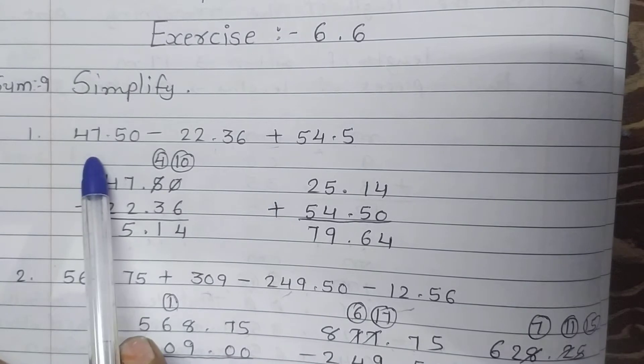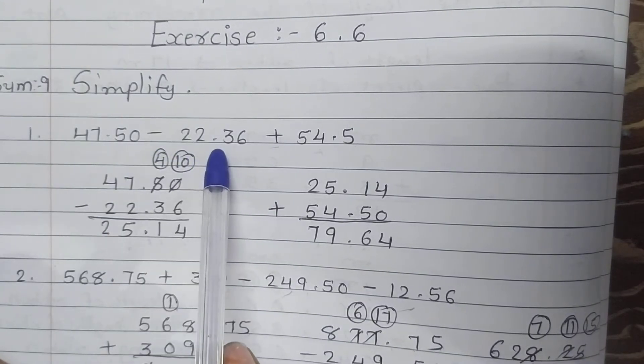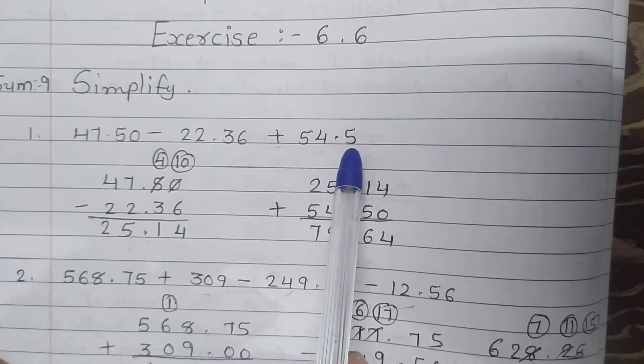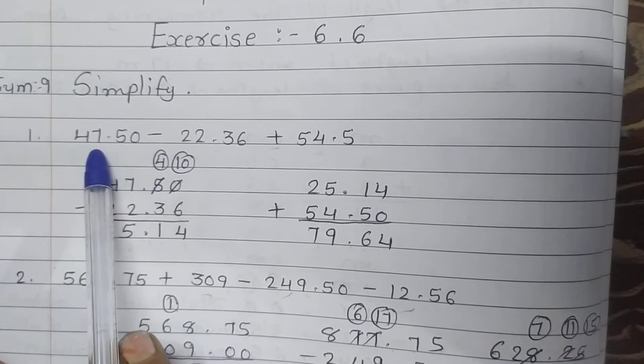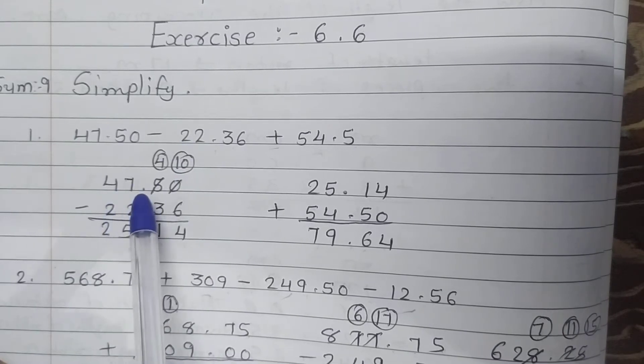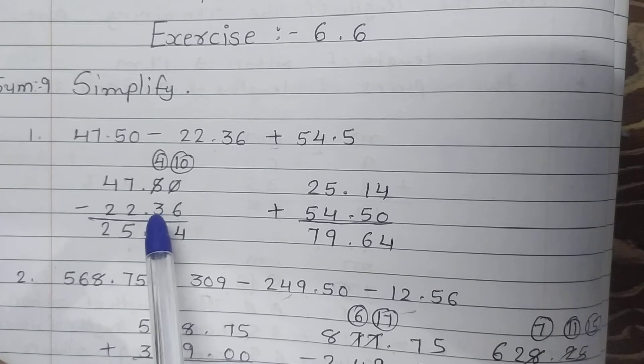First, 47.50 minus 22.36 plus 54.5. Students, first of all we will do subtraction. 47 minus 22 is possible, right?